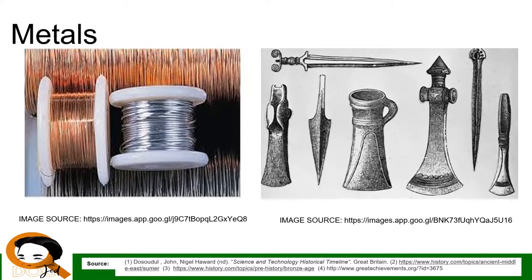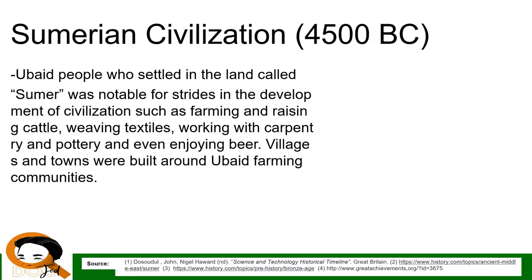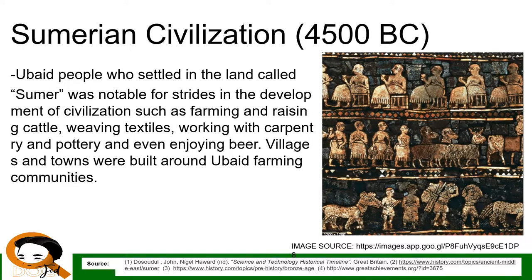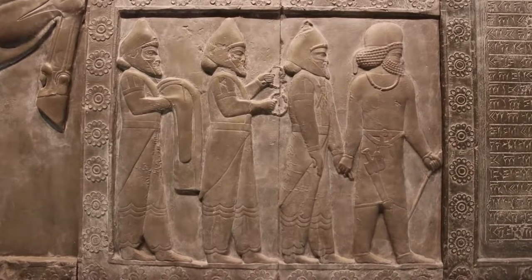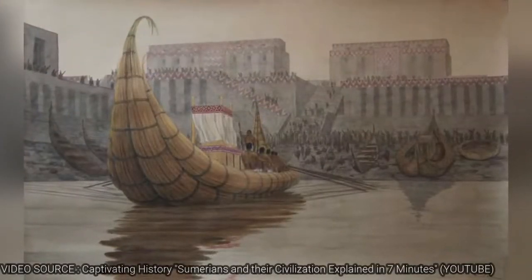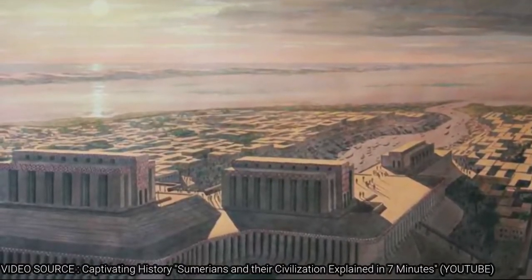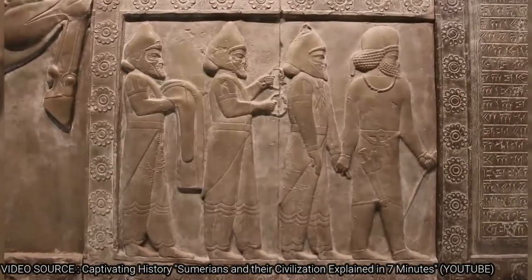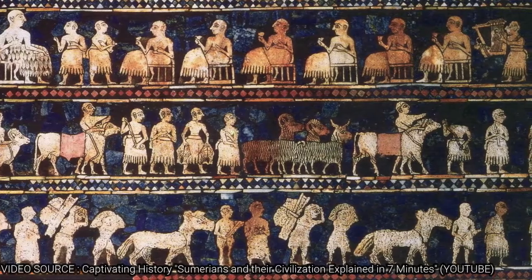The Iron Age was built on a hard, strong, and versatile metal: iron (Fe). The Sumerian civilization dates to 4500 BC. The Ubaid people who settled in the land called Sumer were notable for farming and raising cattle, weaving textiles, carpentry, and pottery. They pioneered the use of canals and levees for irrigation and used sun-baked bricks and bitumen to make roads. They also built large pyramid temples called ziggurats. The modern timekeeping system — 60 seconds in a minute and 60 minutes in an hour — is adopted from them.